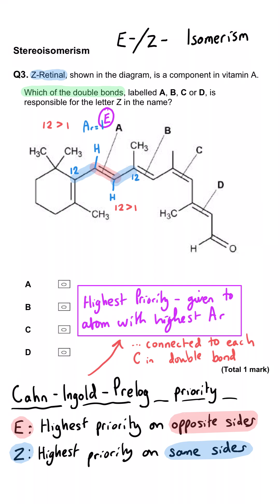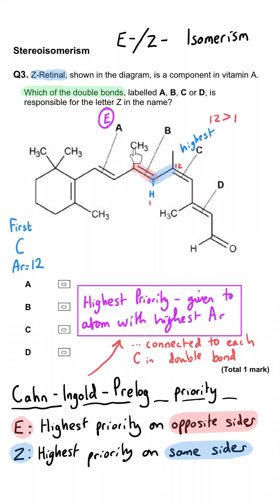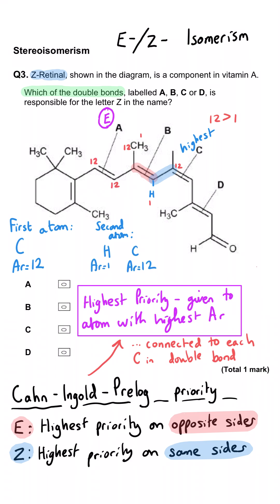Looking at double bond B: on the right-hand side it's obvious which group has highest priority. On the left, the first atoms encountered are both carbons with the same priority, so we work outward. One branch goes carbon then hydrogen; the other goes carbon then carbon — so that branch is higher priority. The highest priority groups on each side point in opposite directions, so double bond B is also E.